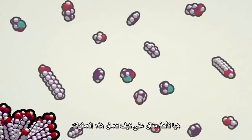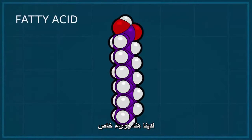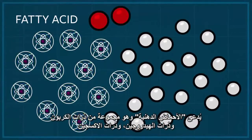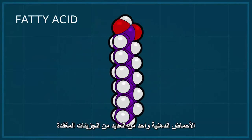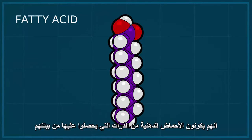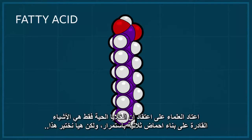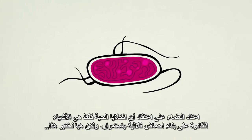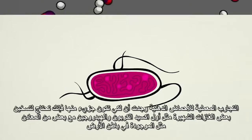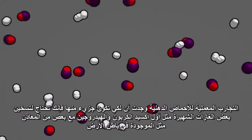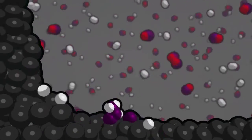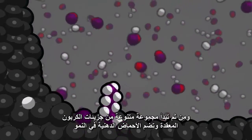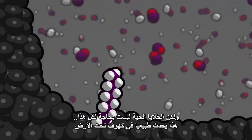Let's see an example of how this process works. This here is a special molecule called a fatty acid — a collection of carbon atoms, hydrogen atoms, and oxygen atoms all stuck together in a specific pattern. Fatty acids are one of many complex molecules that living cells use inside their bodies, and they build fatty acids with atoms they get from their environment. Lab experiments have shown that if simple common gases — carbon monoxide and hydrogen — are heated up with minerals like those found in the Earth's crust, a variety of complex carbon molecules, including fatty acids, begin to grow. Living cells are not needed.